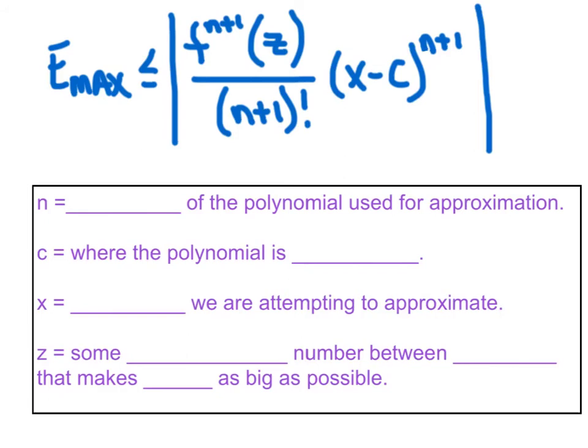And so what I want to do here briefly is I want to define each of those crazy letters and see if we can't sort them out a little better. First of all, n is the degree of the polynomial that you use for approximation. You'll notice in part C, we used a third degree polynomial, so we're going to define n as being 3. c is where the polynomial is centered at. Our last polynomial was clearly centered at 2, so we'll let c be 2. Now, x is sometimes overlooked. x is actually the value that we are attempting to approximate. So again, in part C, they wanted us to approximate f(0), so we're going to let x be 0.